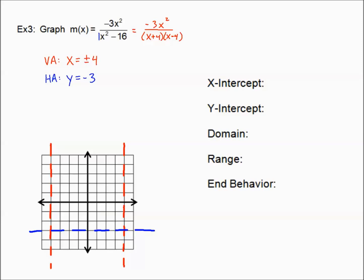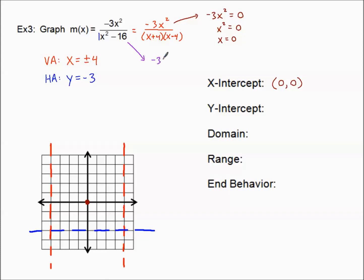X-intercept comes from the numerator. Setting negative 3x² equal to zero — dividing by negative three gives x² equals zero, so x equals zero. Our x-intercept is (0, 0), the origin. And our y-intercept: plugging zero in for x gives negative three times zero squared over zero squared minus 16, which is zero over negative 16, which equals zero. So the y-intercept is also (0, 0), confirmed.